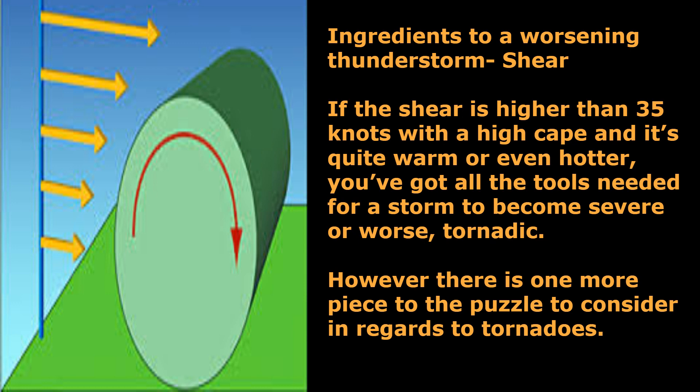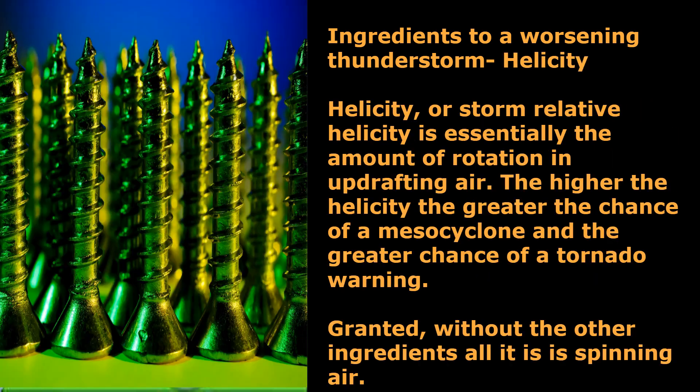But if the shear is higher than 35 knots, with a high CAPE and it's quite warm or even hotter, you've got all the tools needed for a storm to become severe or worse, tornadic. However, there is one more piece to the puzzle to consider in regards to tornadoes.